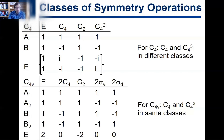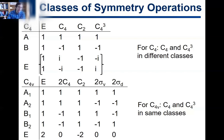That's a 90-degree clockwise rotation followed by another 90 degrees followed by another 90 degrees — in other words, a 270-degree rotation, or a 90-degree counterclockwise rotation. Those two symmetry operations feel the same: one is counterclockwise, the other is clockwise. But in the C4 point group they're in separate classes. In C4v, however, they're grouped together — there's a '2C4' entry, where one is the C4 operation and the other is C4³.